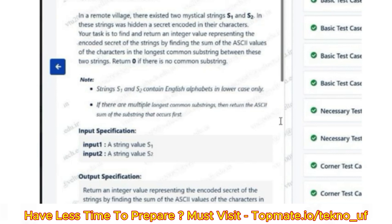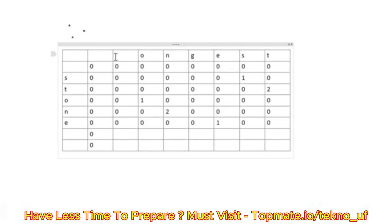Let's go to the code, but before that let me explain the approach. To find the longest common substring, we require a matrix of size M by N, where M represents the length of string one and N represents the length of string two. I have prepared an index one-based matrix, so the first row and first column are all zeros.